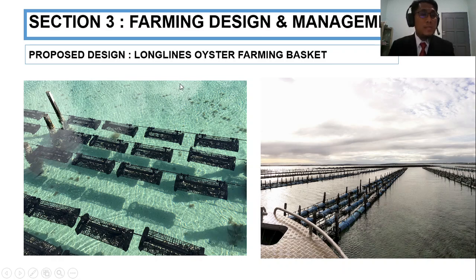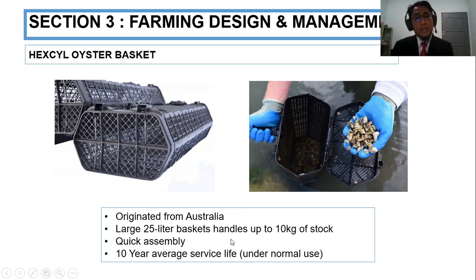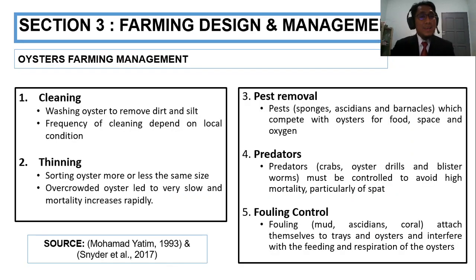The proposed design is long-line oyster farming — for me this is the best farming system for oyster. I chose the technology from Australia: the Hexcel Hawks oyster basket. This 25-litre basket can handle up to 10 kg of stock, has quad assembly, and has a 10-year average service life. The details of the system I will present later in the final presentation.